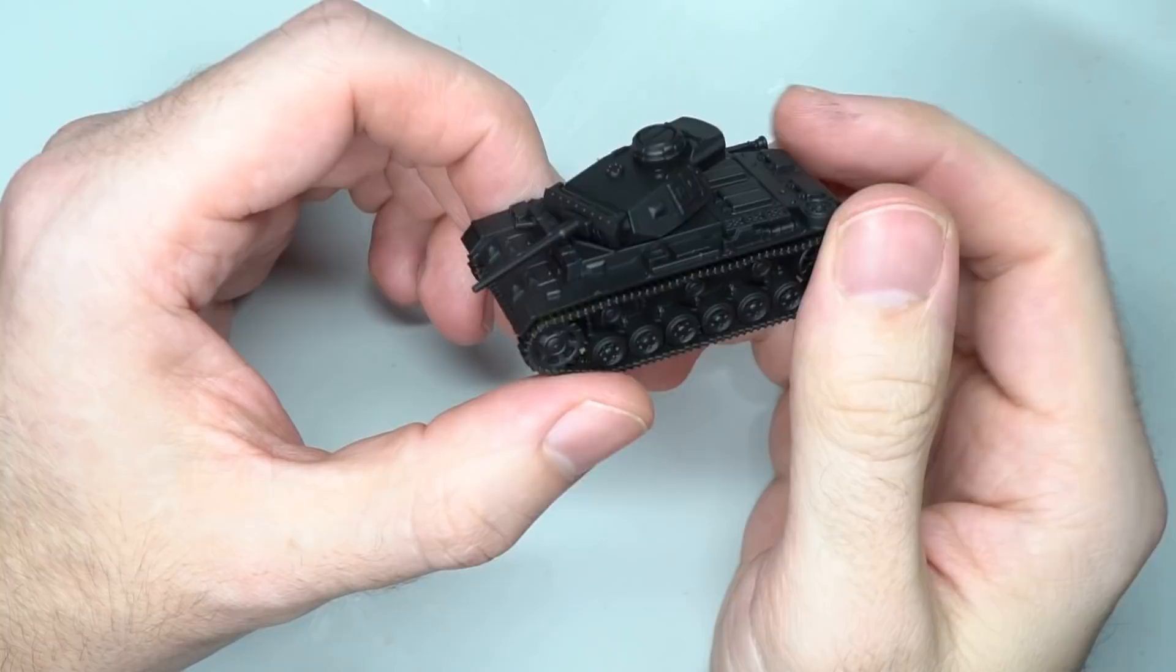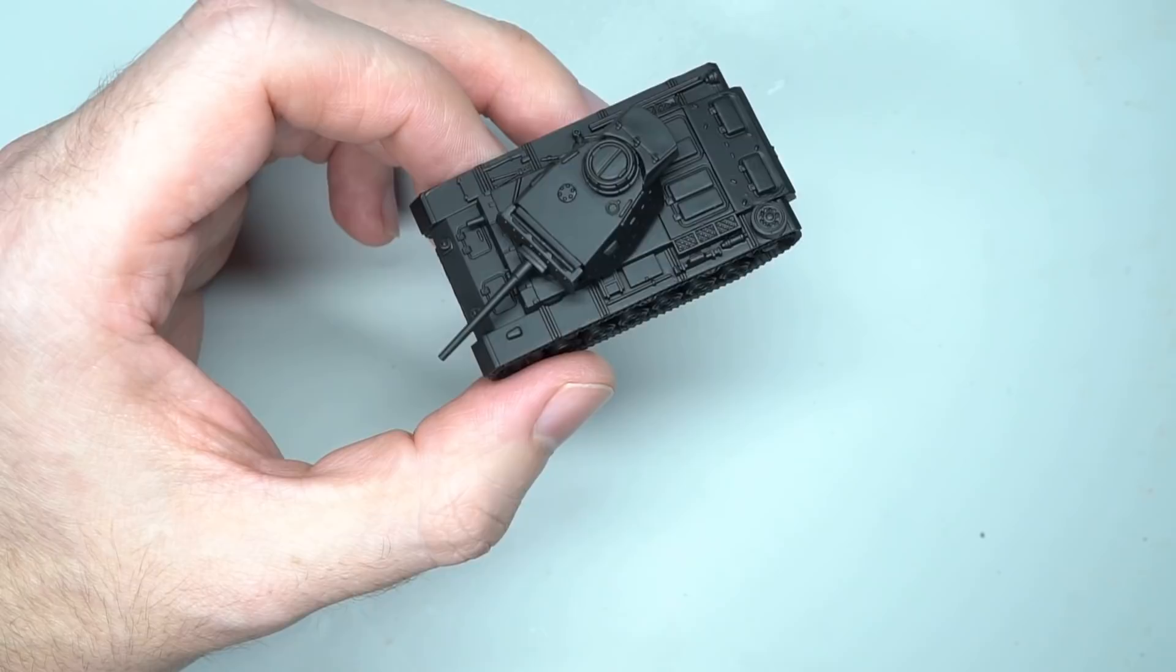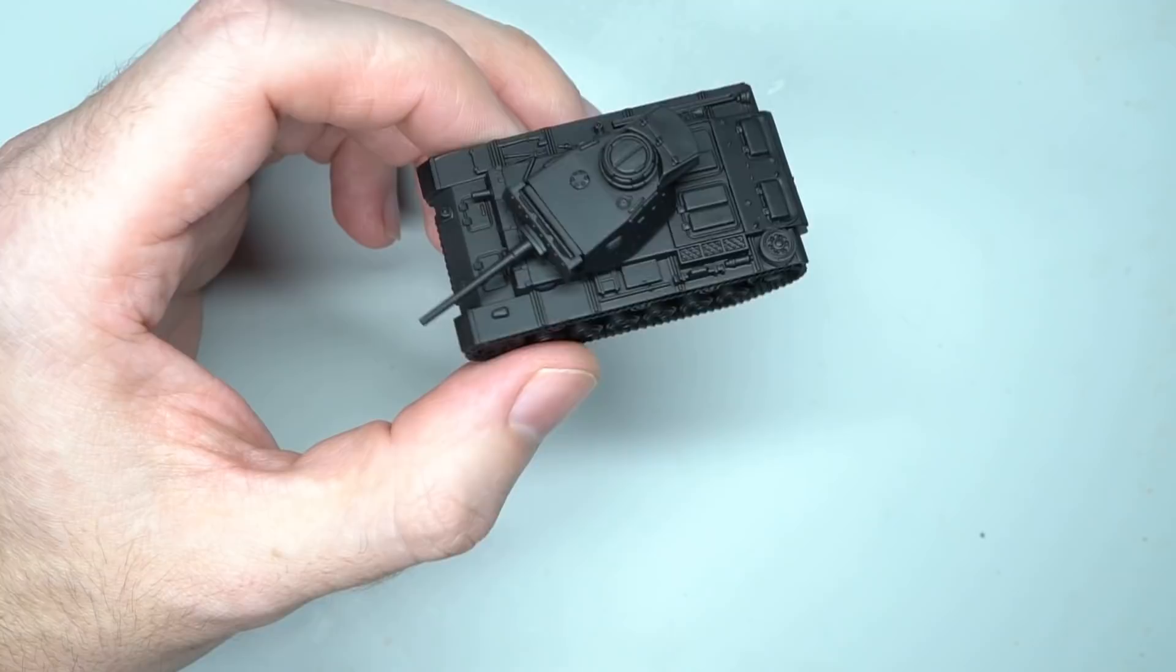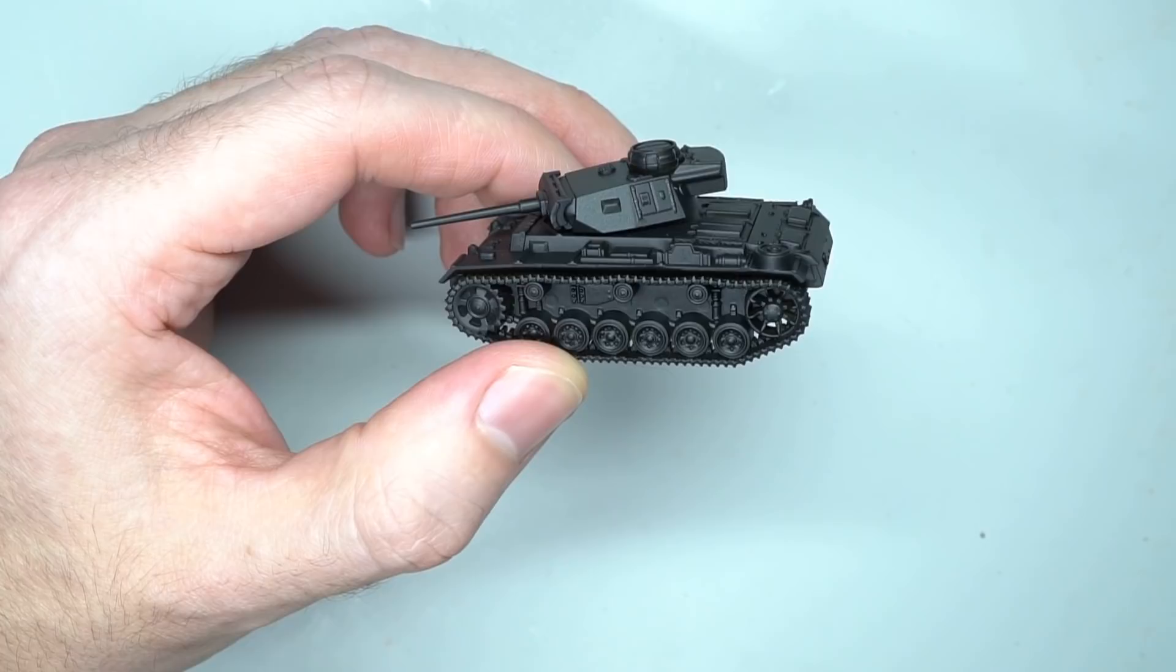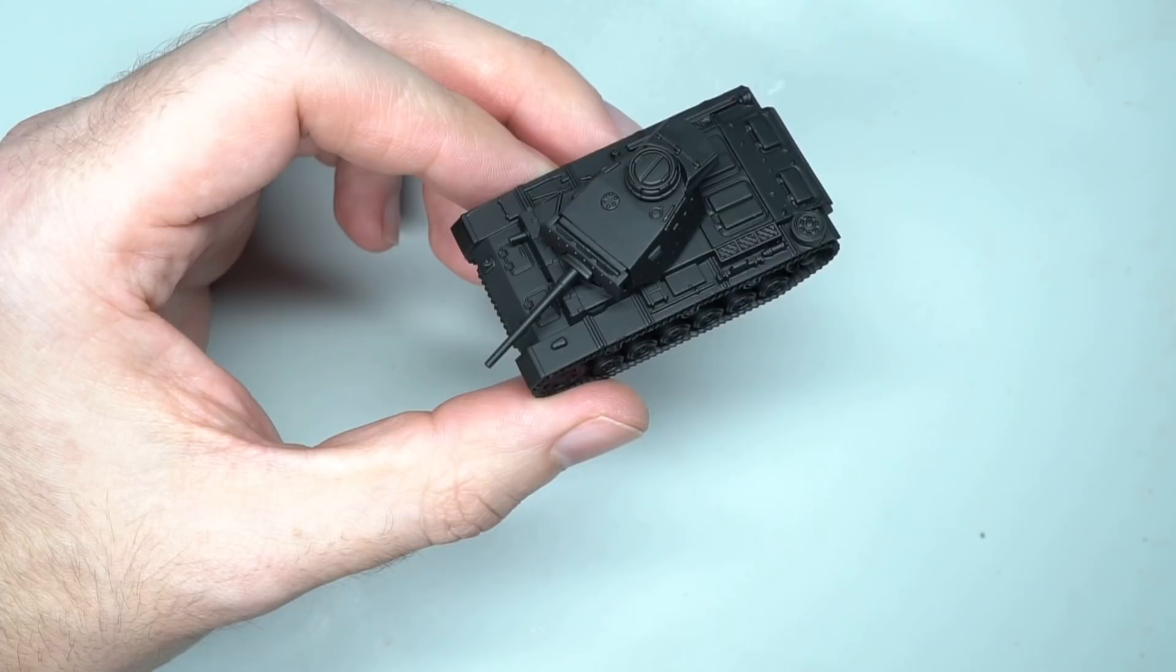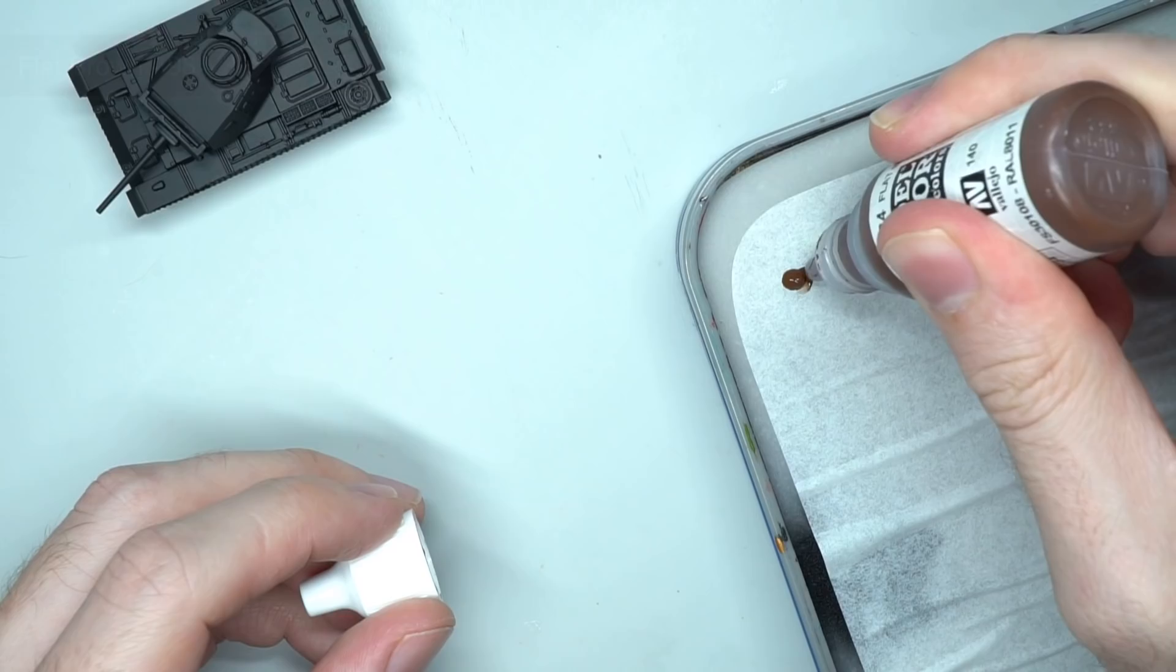Before starting, I needed to apply a primer so the later layers of paint adhere to the miniature surface. For this step, I chose to use a black primer. I would be applying drybrusing techniques in the following steps, so I needed something that would give me dark shadows in the recesses. I used Vallejo's black airbrush primer, but any airbrush, aerosol, or brush-on primer would suffice. It's only important to ensure the model is primed black.